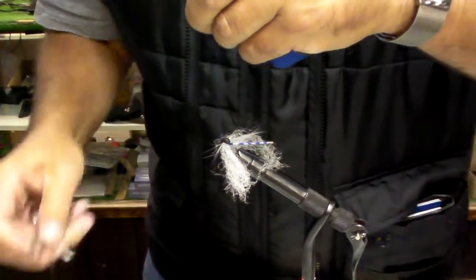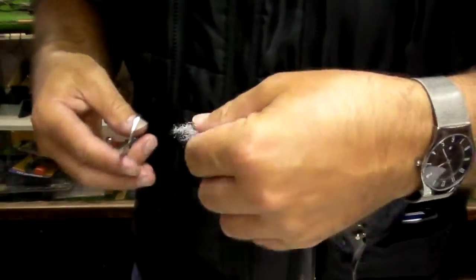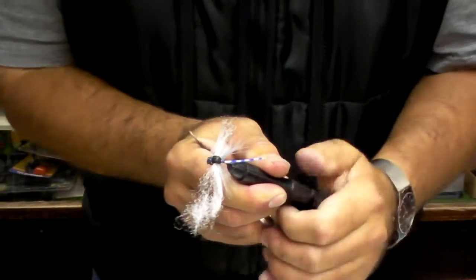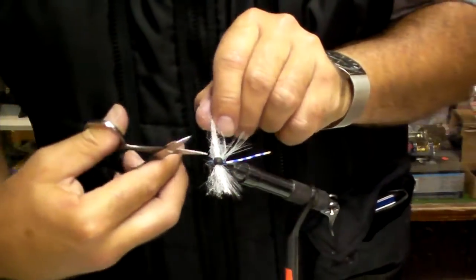We're going to even up the wings. Try not to leave the wings too long—there's no point leaving a long wing because it's just going to twist the leader, and it's really only for profile. So we're going to trim this down, and then we've got a nice bit of profile and wing.